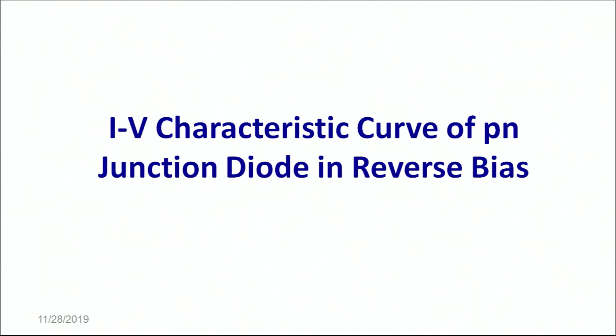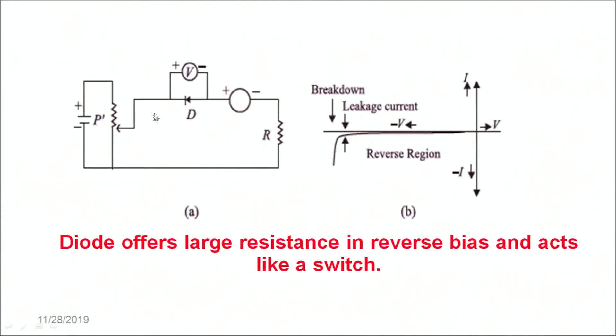Let's talk about the IV characteristic curves of a junction diode in reverse bias. In reverse bias the P side of the diode is connected to the negative terminal of the battery and the N side of the diode is connected to the positive terminal of the battery. This makes the diode connection in reverse bias. Because of this the depletion layer increases and the diode offers a very large resistance in the reverse bias and does not allow the current to flow.